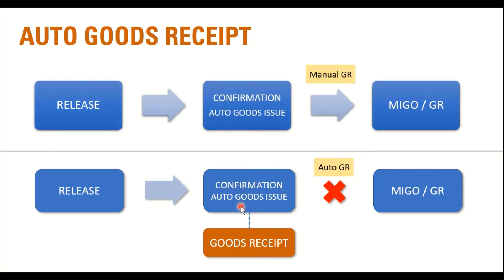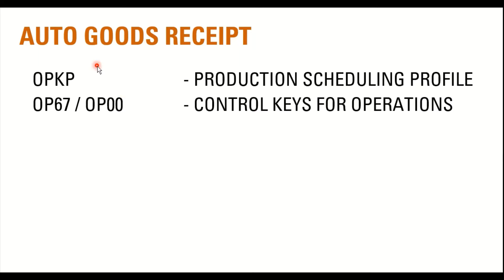The auto goods issue is usually enabled at the first operation, because components need to be consumed during the first operation, or whichever subsequent operation the components have been allocated to. The goods receipt, however, is always performed while confirming the final operation in the operation list of the production order. This way, the user can skip the additional step of executing the goods receipt in the MIGO transaction.